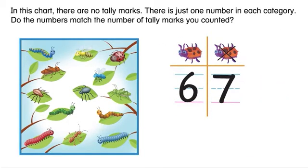In this chart, there are no tally marks. There is just one number in each category. Do the numbers match the number of tally marks you counted?